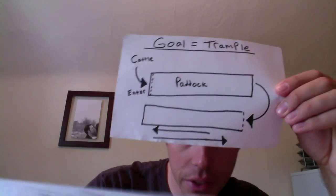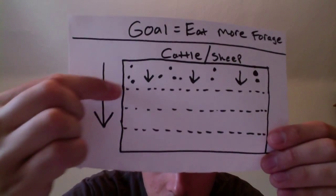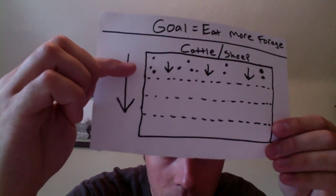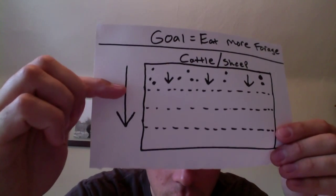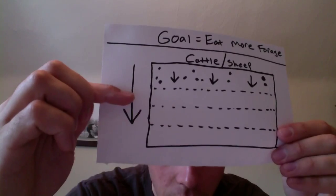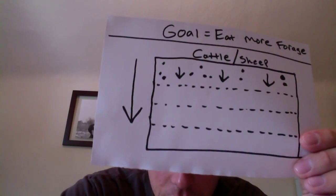As you can see on this one, there's not going to be this side-to-side motion. It's going to be more of a downward motion on this piece of paper. Which means they're going to be trampling less grass and utilizing more of the forage.